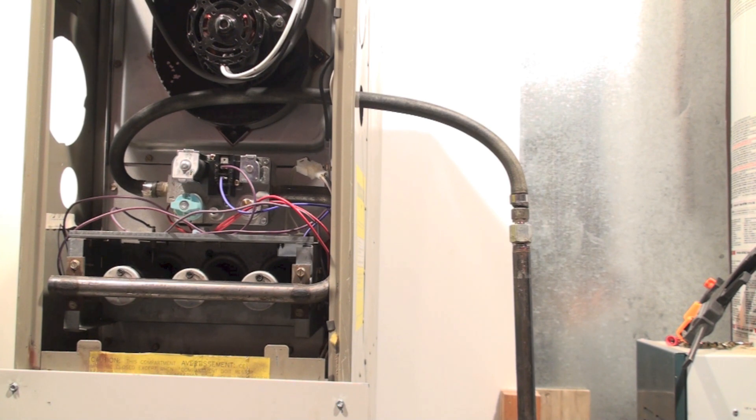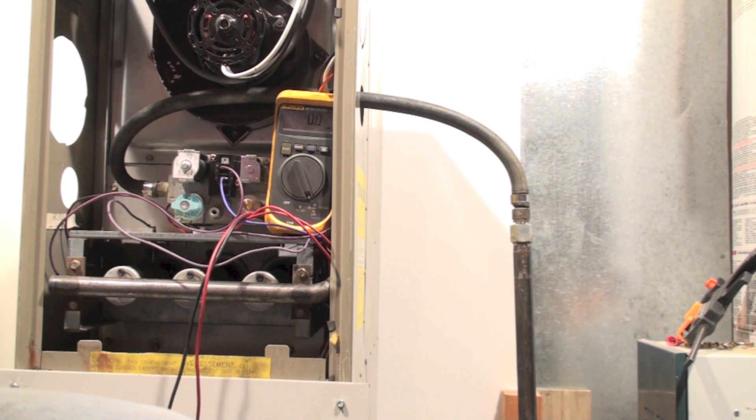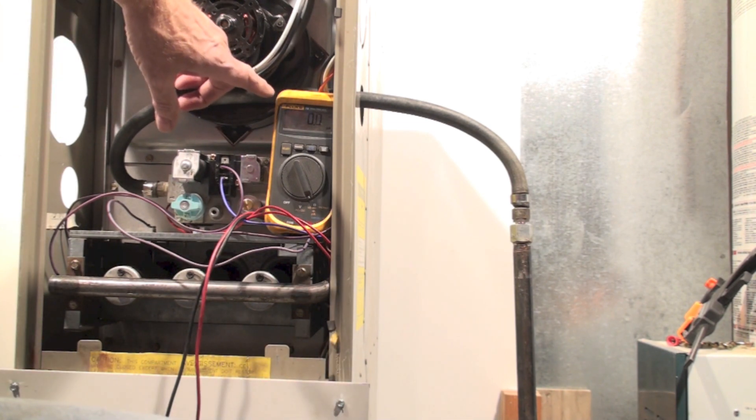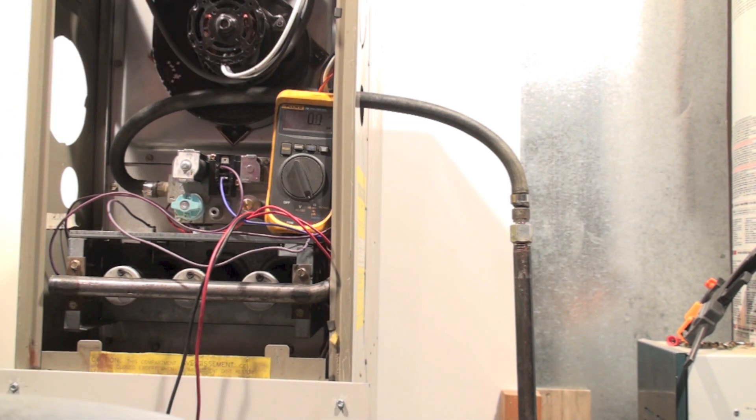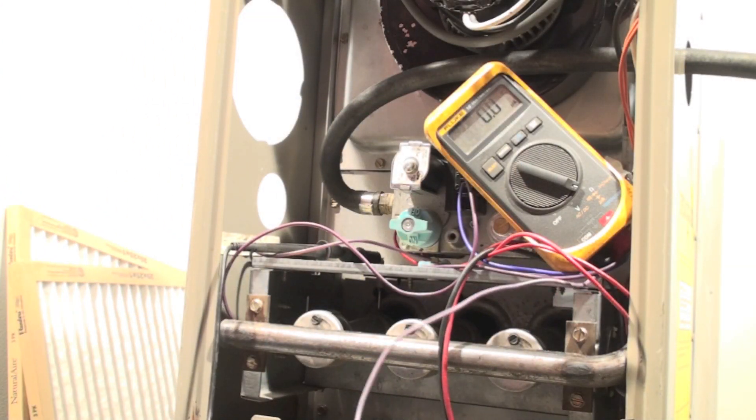Now here I'm set up to check microamps. I've got my meter here, it's set in the microamps position, and I'm going to have to pull the wire off the flame rod right here. Okay, now what I've done is I've taken the flame rod wire off here and I've taken my meter and put it in series with the flame rod.